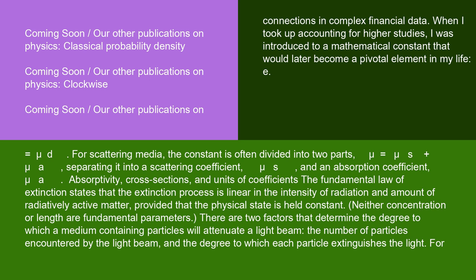Absorptivity, cross-sections, and units of coefficients: the fundamental law of extinction states that the extinction process is linear in the intensity of radiation and amount of radiatively active matter, provided that the physical state is held constant. Neither concentration nor length are fundamental parameters. There are two factors that determine the degree to which a medium containing particles will attenuate a light beam: the number of particles encountered by the light beam, and the degree to which each particle extinguishes the light.